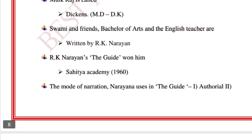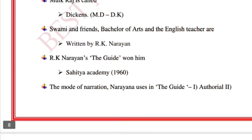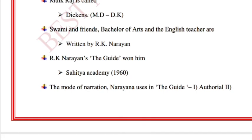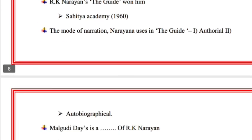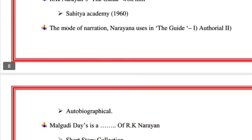'Swami and Friends,' 'Bachelor of Arts,' and 'The English Teacher' are written by R.K. Narayan. R.K. Narayan's 'The Guide' won him the Sahitya Akademi Award. The mode of narration Narayan uses in 'The Guide' is authorial.